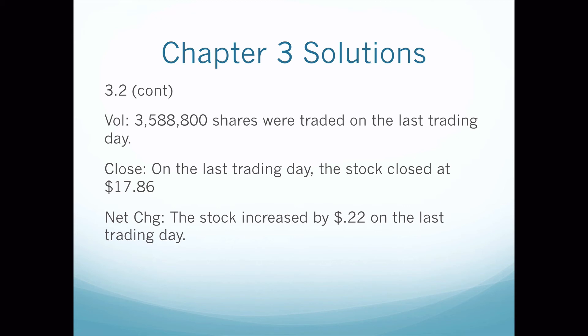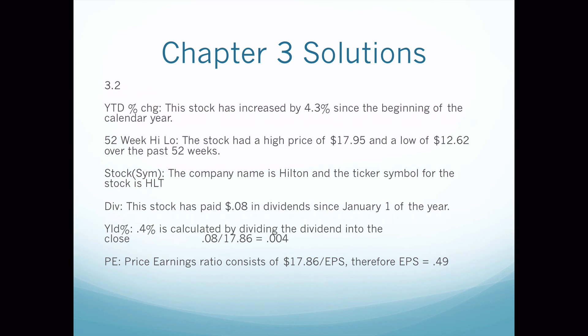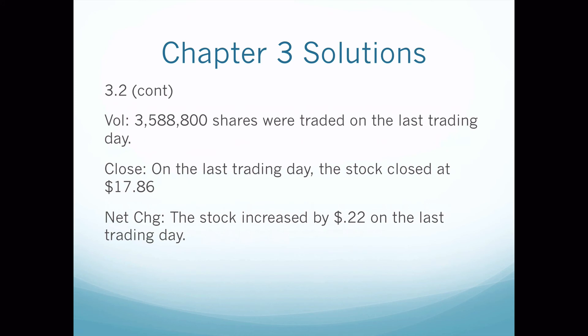For volume, you need to say that three million five hundred eighty-eight thousand eight hundred shares were traded over the last trading day. For bonds, volume is multiplied by thousands; for stocks, volume is multiplied by hundreds — that's something you'll need to memorize. The close is the closing price of the stock on the last trading day. It closed at 17.86. The net change is what the stock did from the last trading day to the day before: on Monday the stock was $17.64, and on Tuesday the close was $17.86.